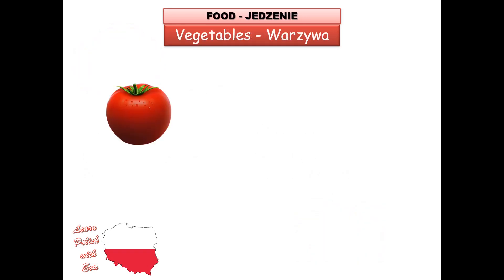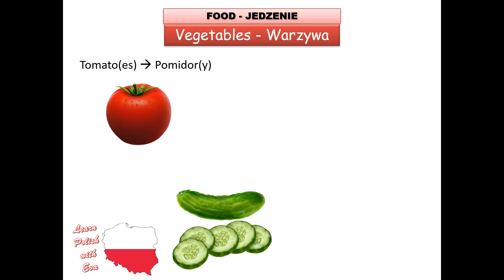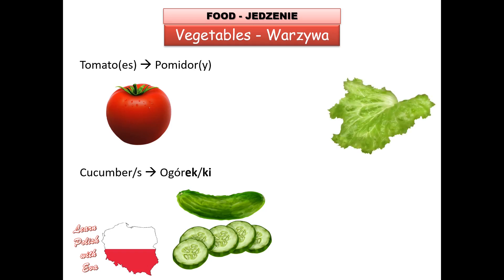The first vegetable I will be showing you is 'pomidor' — tomato. In the brackets we have the plural version. Wherever you see a bracket, that means you simply add the letter. In this example, 'pomidor' is singular and 'pomidore' is plural. After that we will have different types of plurals. 'Ogurek' is one cucumber; the slash means whatever is in bold is exchanged — so we no longer say 'ogurek', we say 'ogurki'.